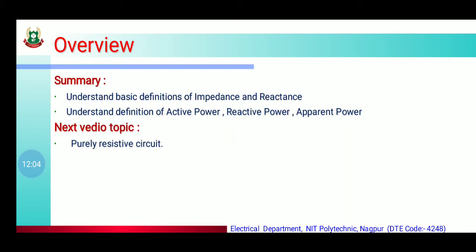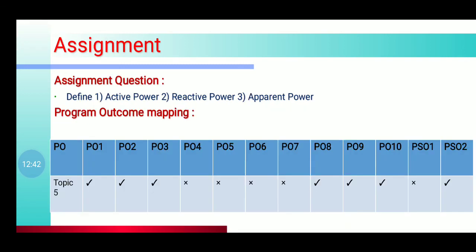Overview: In this video we learned the basic definitions of impedance and reactance, types of impedance (polar form and rectangular form), types of reactance (inductive and capacitive), and basic definitions with formulas of active power, reactive power, apparent power, and power triangle। हम next video में purely resistive circuit के बारे में पढ़ेंगे। Assignment: Define active power, reactive power, and apparent power — and write the answer in your copy.